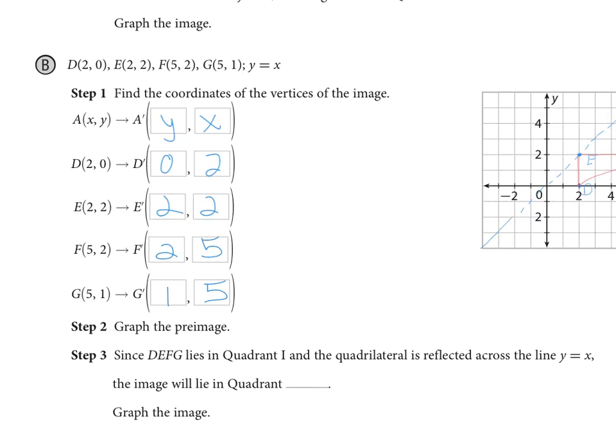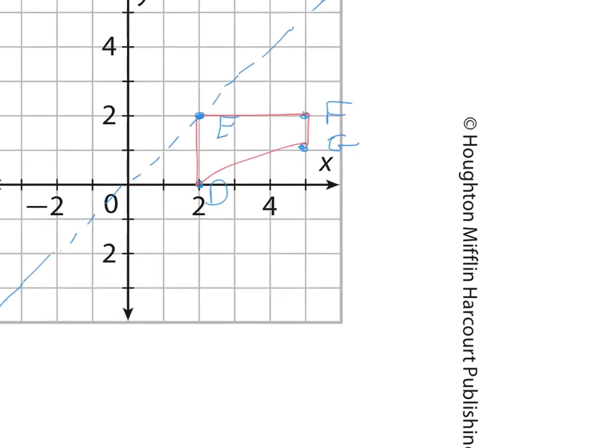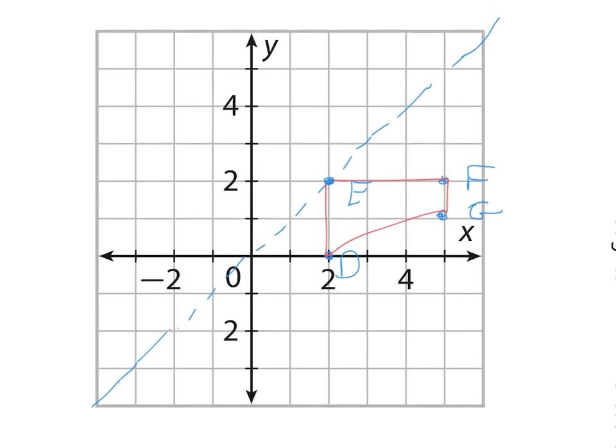So let's go ahead and plot those points. 0,2 is this point here. 2,2 is going to stay right on E. So this is D prime, this is now E prime as well. F prime is going to be 2,5 up here. And G prime is going to be 1,5 right here. So we've got our new image four-sided figure, and that is what we have there. If you kind of tilt your head to the side, you can see the mirror image happening there over the line y equals x.